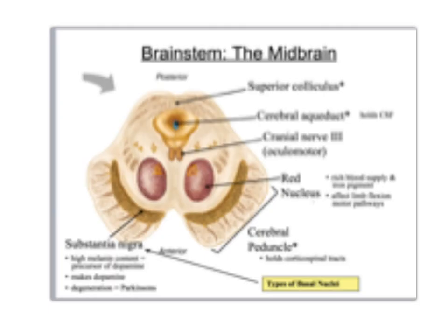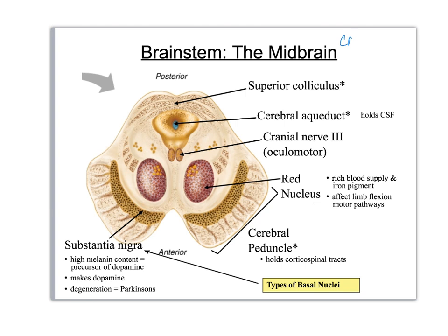Now we've taken the brainstem and done a cross section — a transverse section through it. Like you've cut the head off and you can see better the cerebral peduncle. You've got a right and a left.